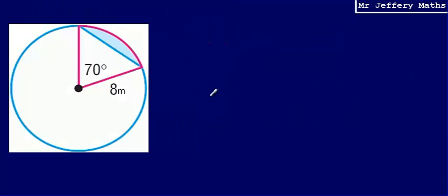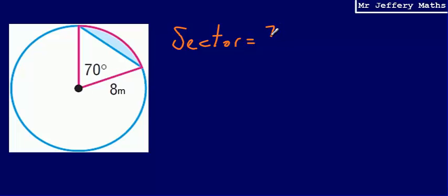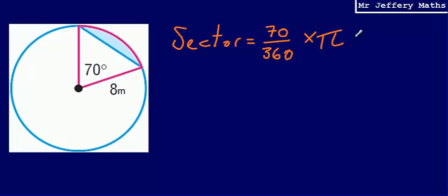Let's take a look at a second example — same idea. In order to calculate the area of this segment, I'm going to start by calculating the area of the sector, the pizza shape. The proportion of the sector here is 70 degrees out of 360, and then multiply that by the area of the entire circle, which we work out using pi r squared — so multiplied by pi times 8 squared.